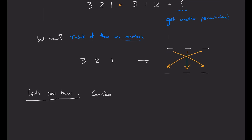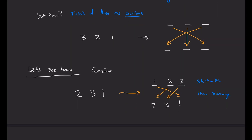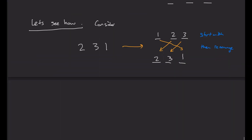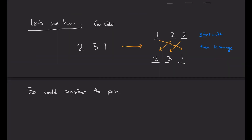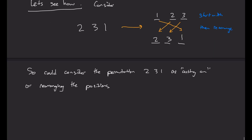Let's start by considering the permutation (2, 3, 1). You might imagine that to get this, you can start with the numbers in order — 1, 2, 3 — and then physically rearrange them. So put 1 in the last slot, put 2 in the first slot, and put 3 in the third slot. In this sense, I could consider the permutation (2, 3, 1) as acting on or rearranging the positions themselves.